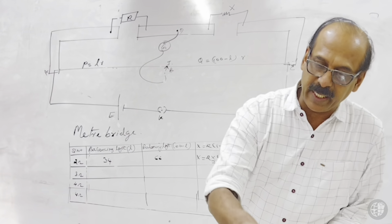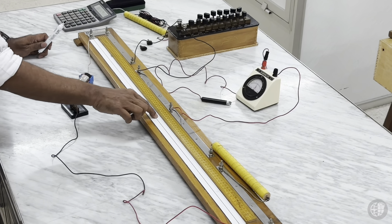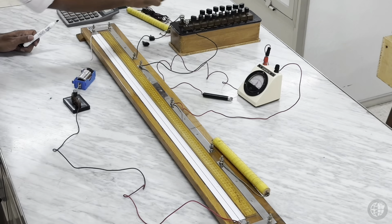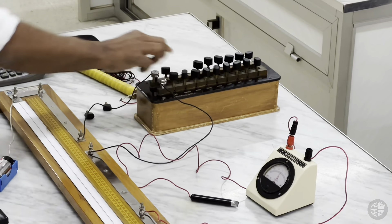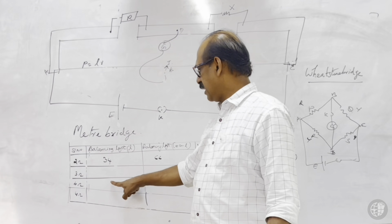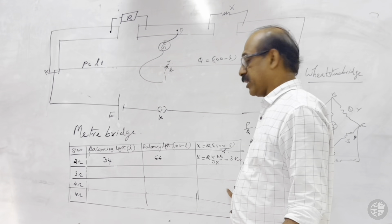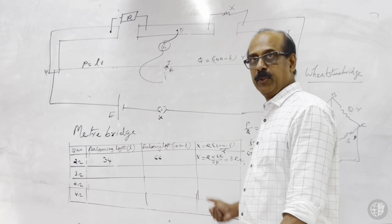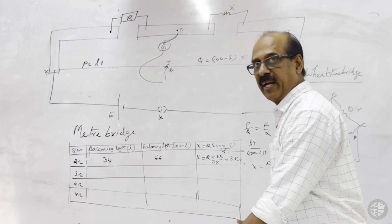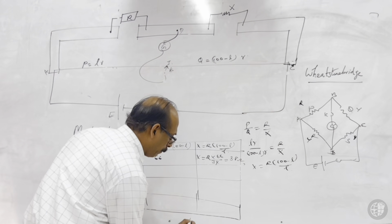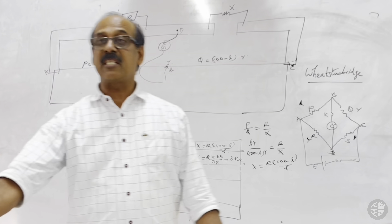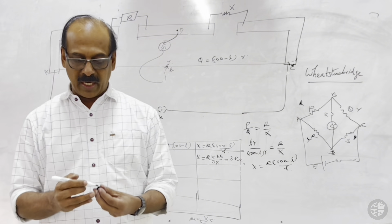Repeat the experiment with 3 ohms in the resistance box — find the balancing length L and calculate X again. Then use 4 ohms (inserting two 2-ohm plugs together). Repeat for 5, 6 ohms and so on — take a minimum of five readings and calculate the mean value of X. The mean value of X gives approximately 3-point something ohms. This is the method to calculate resistance of the given wire.